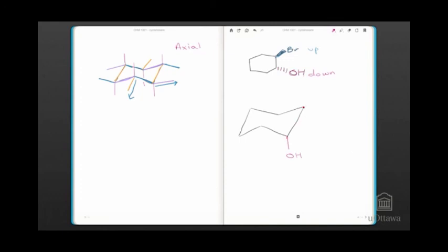needs to be pointing up. Now the only position pointing up on that carbon, because it's an upward V, is an axial up position. There are other ways this chair could have been drawn and still be the same molecule.